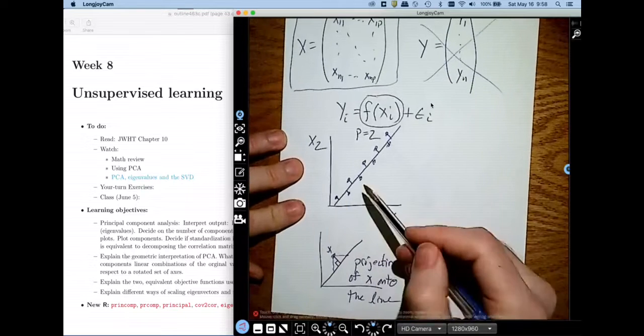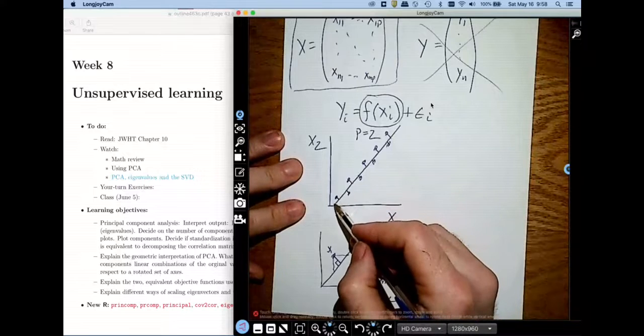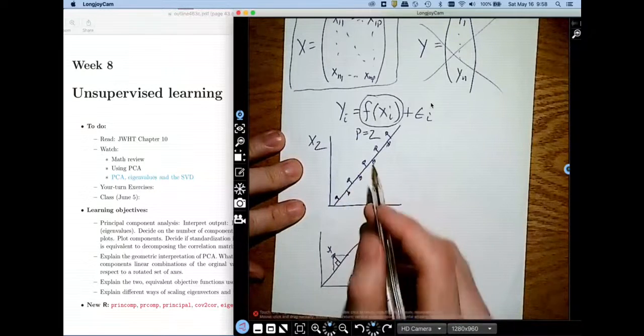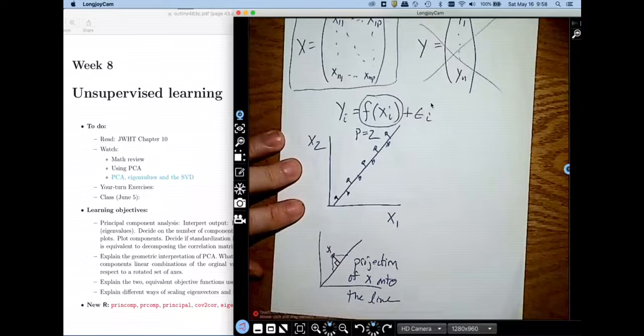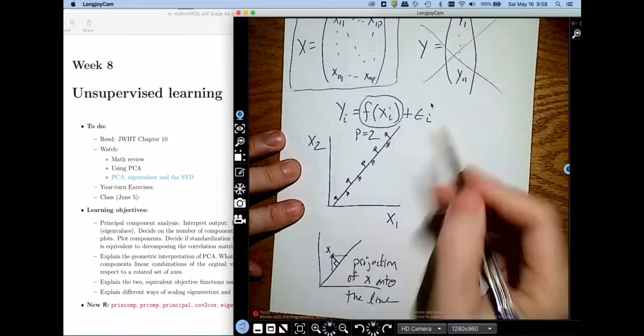What I'm really trying to do with principal components analysis is find a line so that these projections, the sum of these lengths of the projections, is as small as possible. That's one objective function that we can write out to identify this line.